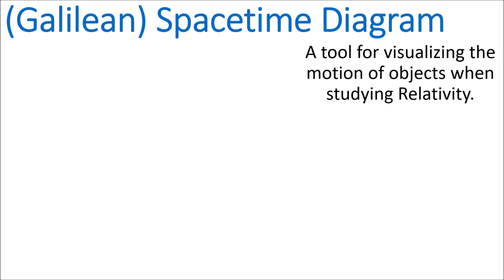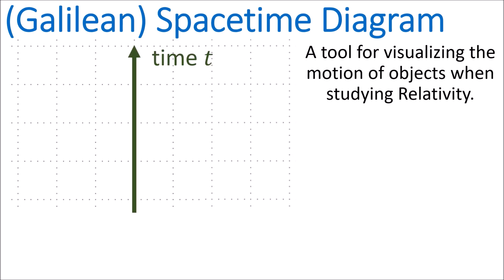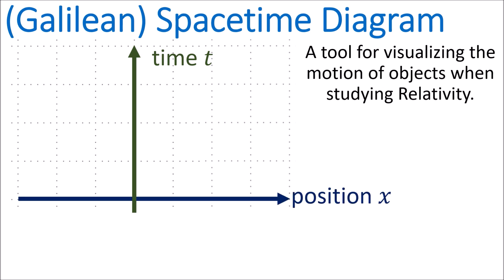A spacetime diagram is a tool for visualizing the motion of objects in different frames of reference. In this video, we're going to be using spacetime diagrams to study Galilean relativity. A spacetime diagram has time along the vertical axis, increasing upward, and position along the horizontal axis, increasing to the right.